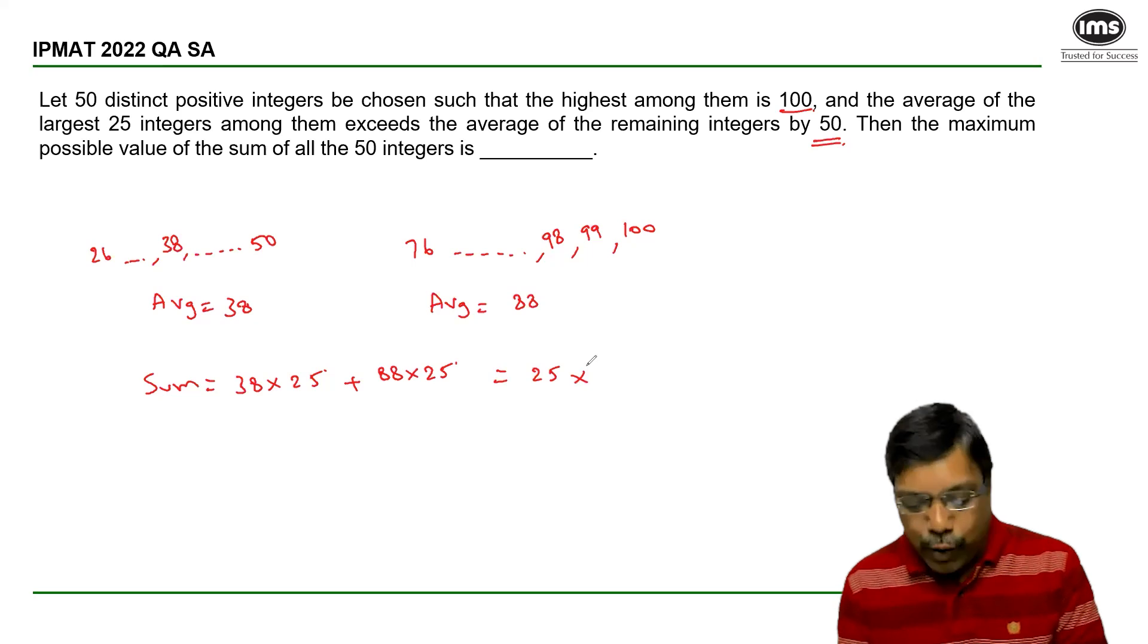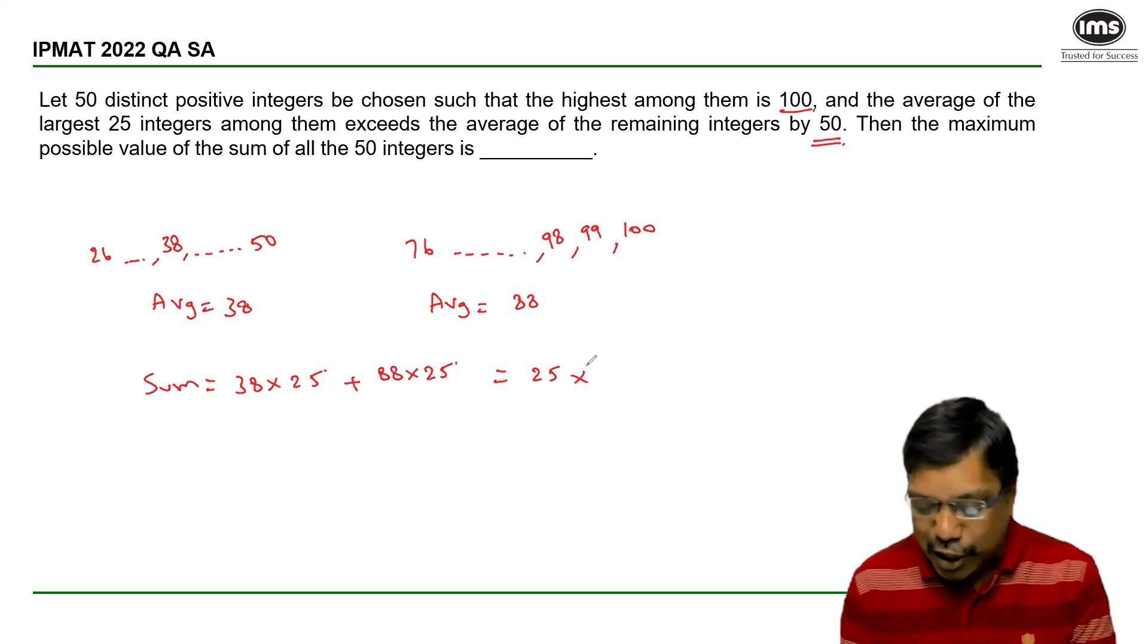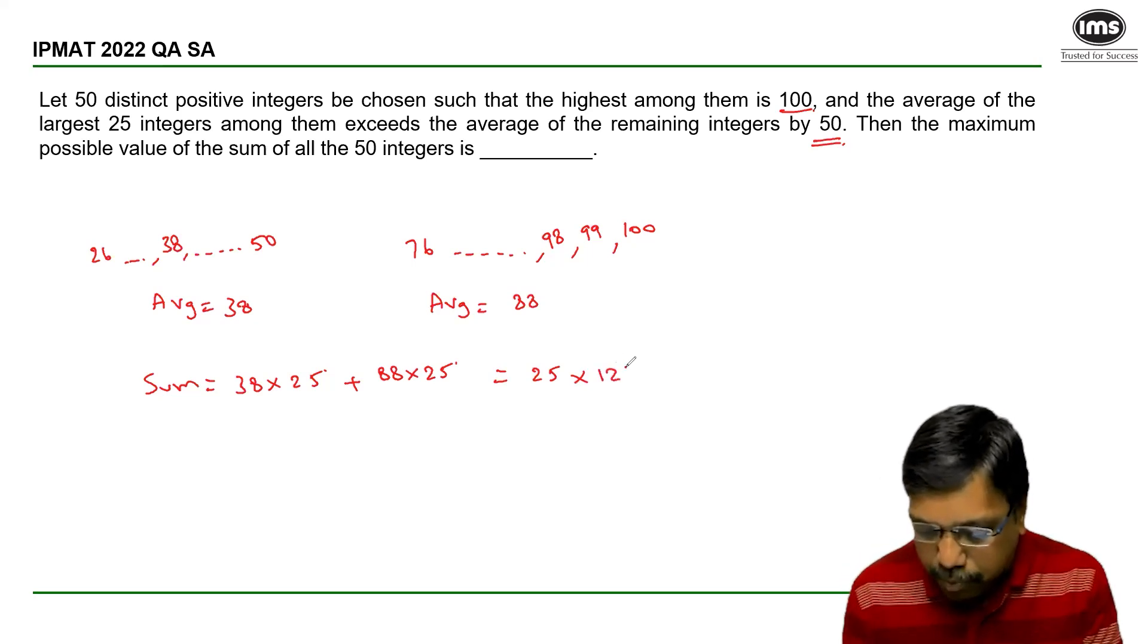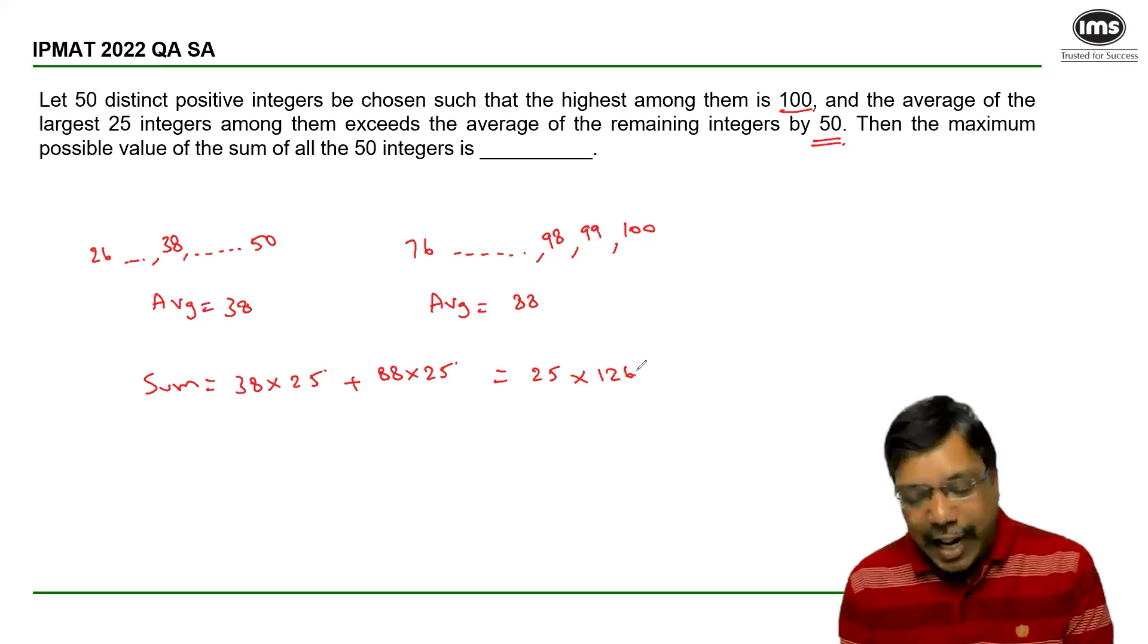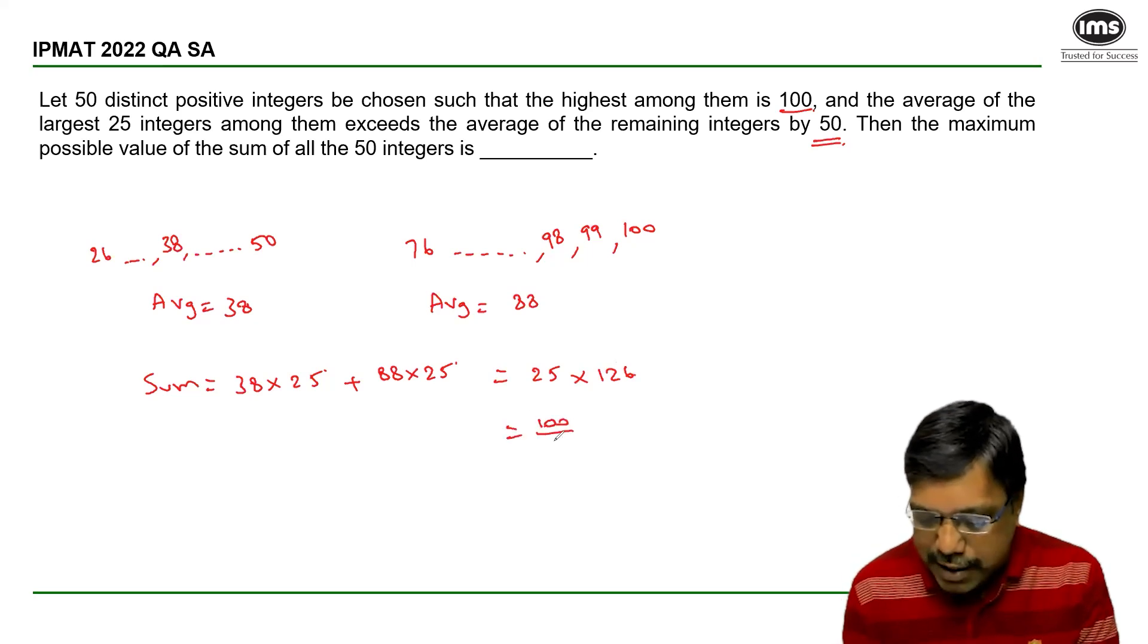80 plus 30 is 110, 8 and 8 is 16, so 126. To make the calculation easy, I can write 25 as 100/4 × 126, which gives us 3150.